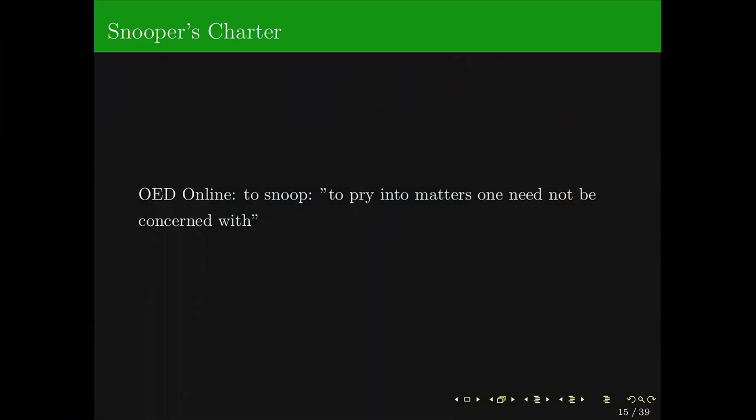In this talk I will pick out three keywords: the term "Snoopers Charter," "mass surveillance" — everyone's favorite word — and "bulk data." So in order to find out what "snoop" means, I consulted the dictionary. In the Oxford English Dictionary, "to snoop" is defined as "to pry into matters one need not be concerned with." Keep that in mind.